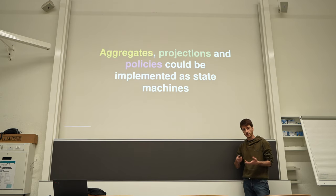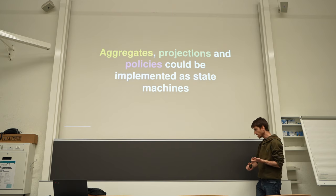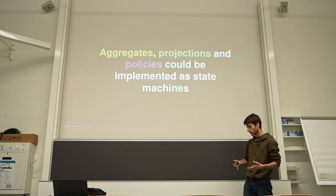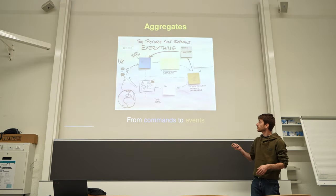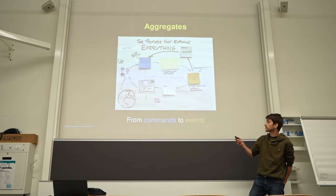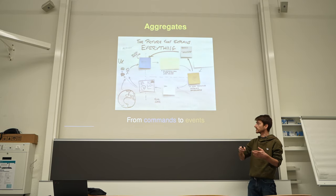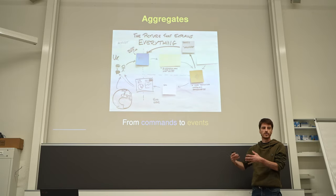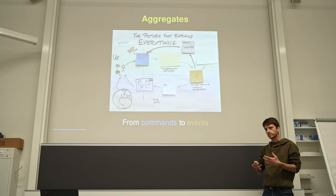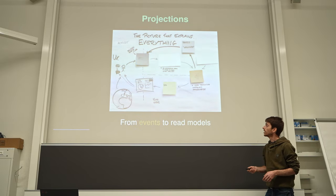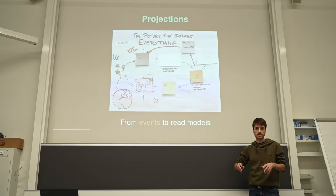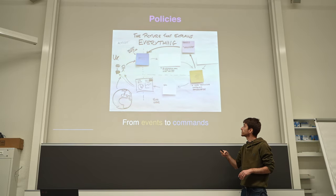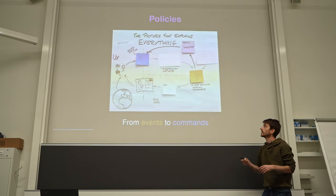State machines are quite interesting things because they're really composable, they can be serialized very well, they have graphical representations, and many good properties you might want to use in your implementation. To briefly recap: aggregates have the role of processing commands from users and deciding which events to emit. Projections just take events and aggregate them to create the read model — information you want to serve to the user. And policies react to events to create new commands in a stateful way.